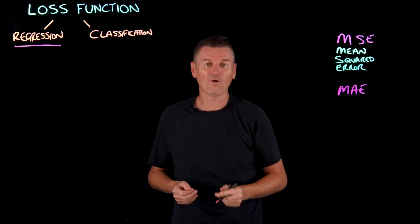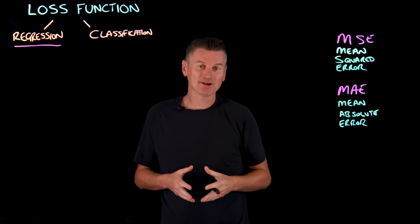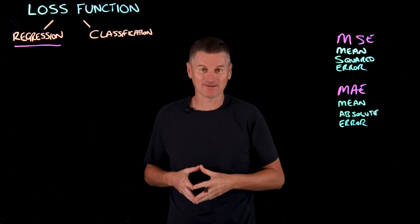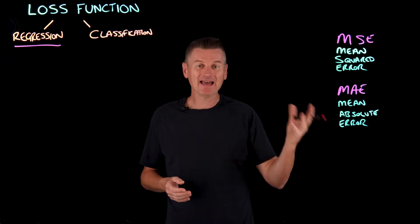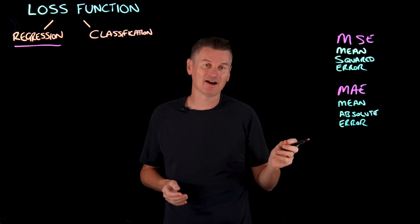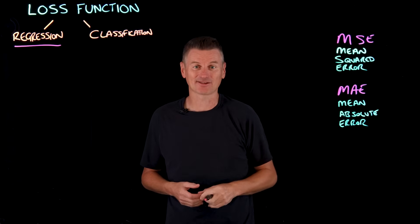MAE, or mean absolute error, measures the average absolute difference between the predicted value and the actual value. MAE is less sensitive to outliers compared to MSE as it doesn't square the errors.